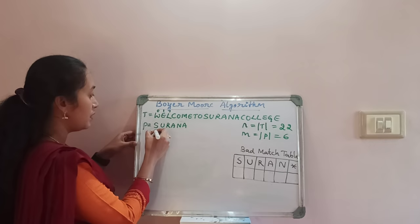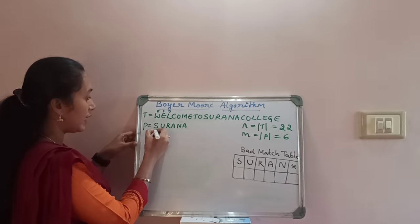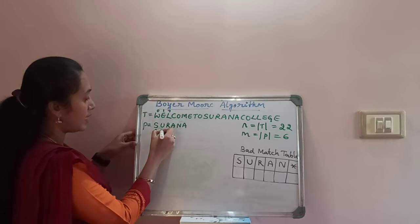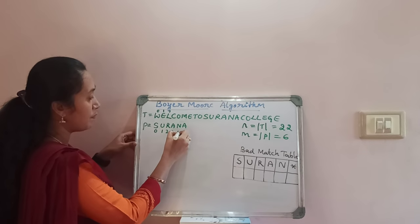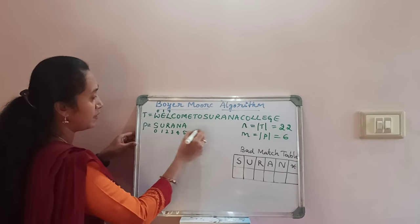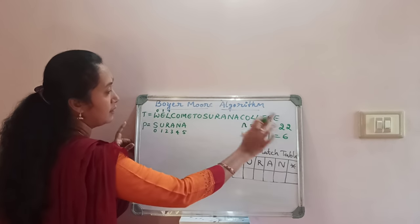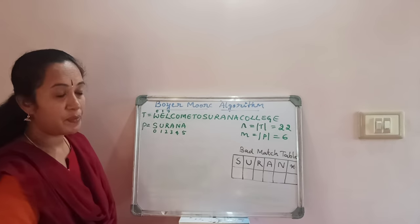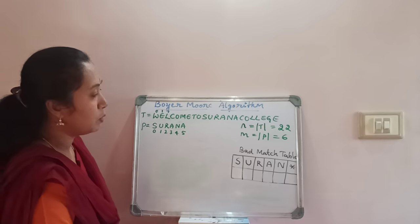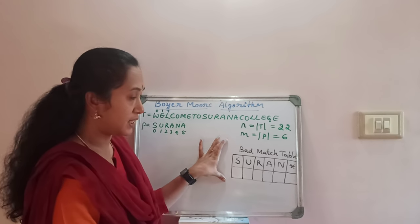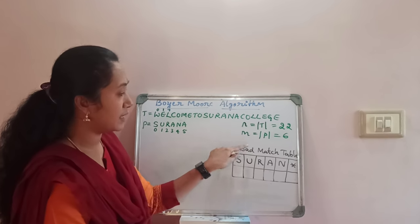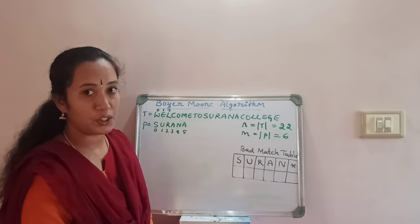If you observe, here again we consider it as an array 0, 1, 2, 3, 4, 5 — so the pattern length is 6. Now let us move to the pre-processing step where we construct the bad match table. Here is a table where all the characters from the pattern have been written. There should not be any repeated characters in the table.